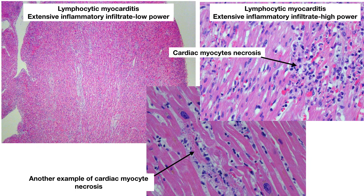This is another example of lymphocytic myocarditis. The top two images are from the same heart, and the bottom one is added to show a good example of cardiac myocyte necrosis. In the top left, a low-power view shows little blue dots throughout the myocardium — the extensive lymphocytic infiltrate. On the right, a closer view shows the lymphocytic infiltrate associated with coagulative necrosis damage to cardiac myocytes. At the bottom left arrow, the myocyte is contracted with loss of nuclei and infiltrate of surrounding cells.